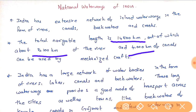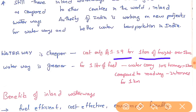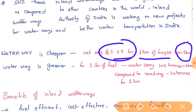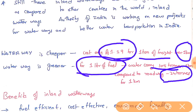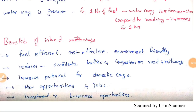It costs around 1 rupee 19 paise to transport 1 ton of freight over 1 kilometer by waterway. In terms of fuel efficiency, 1 liter of fuel can carry 105 tons over one kilometer by water, whereas a lorry or road container can only transport 24 tons per kilometer. The difference is very very huge if we opt for waterways.